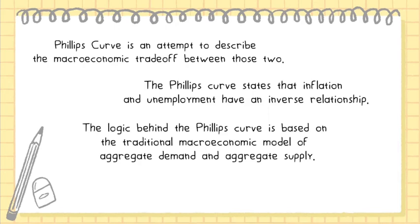The logic behind the Phillips Curve is based on the traditional macroeconomic model of aggregate demand and aggregate supply. Since it is often the case that inflation is the result of increased aggregate demand for goods and services, it makes sense that higher levels of inflation would be linked to higher levels of output and therefore lower unemployment.